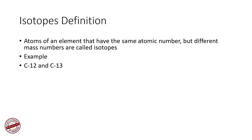Carbon-12 and carbon-13 are two isotopes of carbon. Similarly, uranium-235 and uranium-239 are two isotopes of uranium. The number of neutrons in both of these are different — that's what is implied by the different mass numbers.